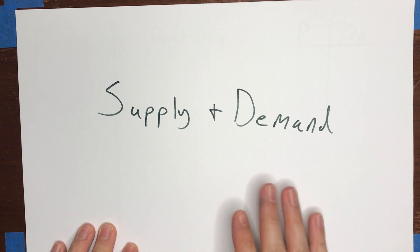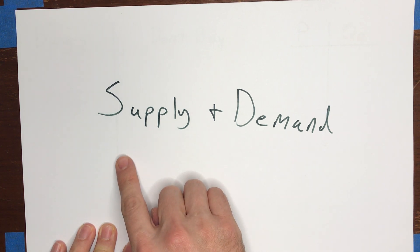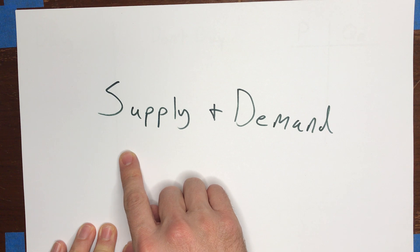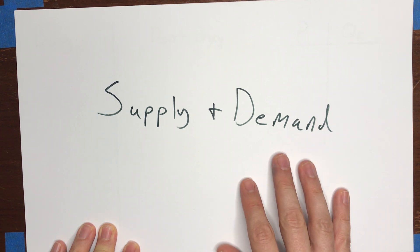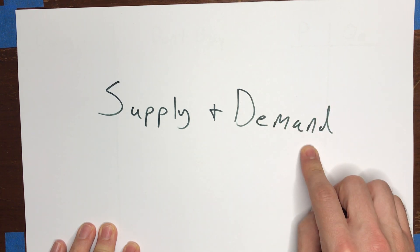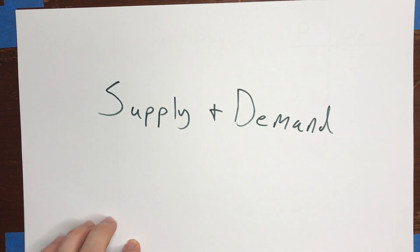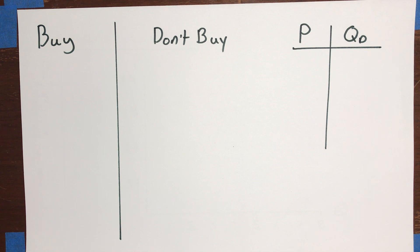We'll put supply and demand together when we get to chapter 4 on equilibrium. While economists always say 'supply and demand,' whenever we're explaining the concept we almost always talk about demand first. So that's what we're going to discuss in this first series of videos, and later on we'll talk about supply.